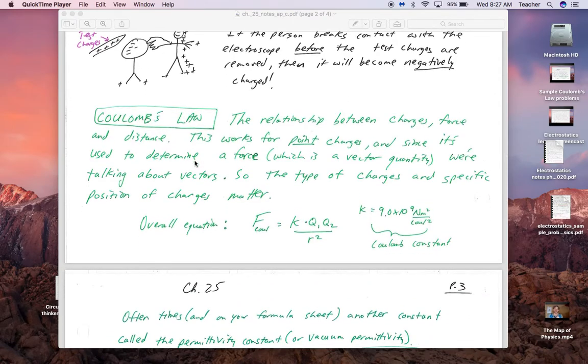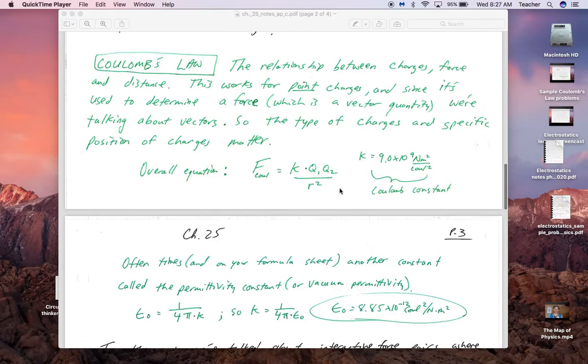Coulomb's Law is the big mathematical relationship in Chapter 25. It works vectorally, so just like anything else where you have a force, you have interactive forces. The force on one thing is equal to the force of that thing back on the original object, so interactive force pairs still apply.